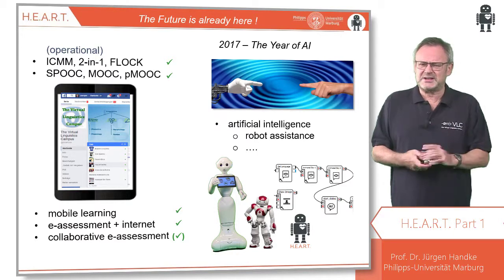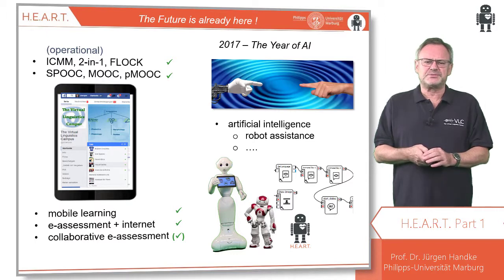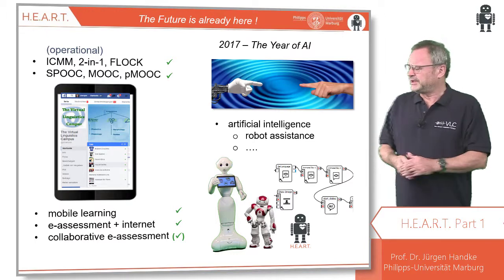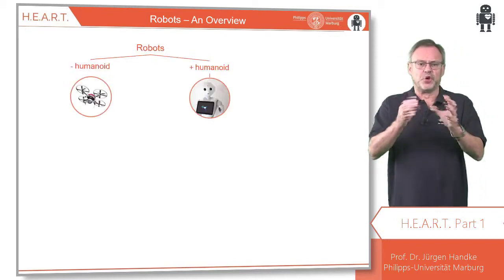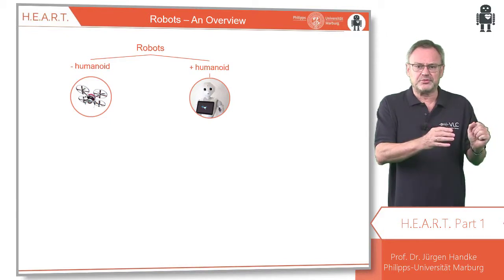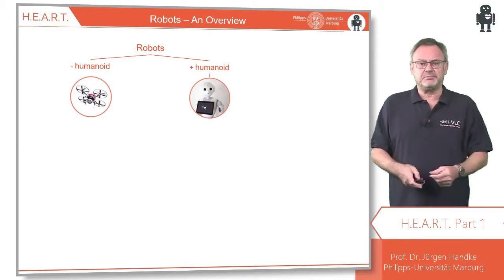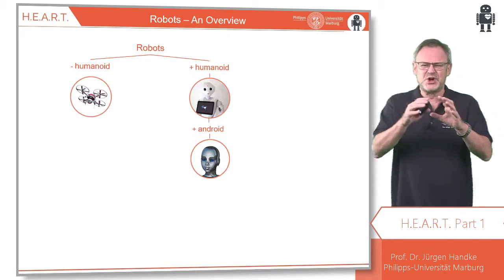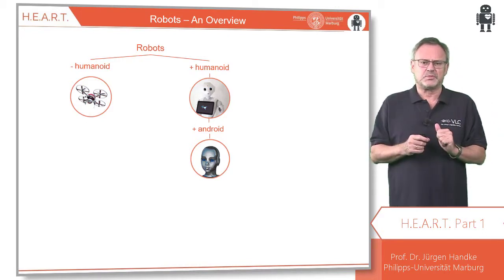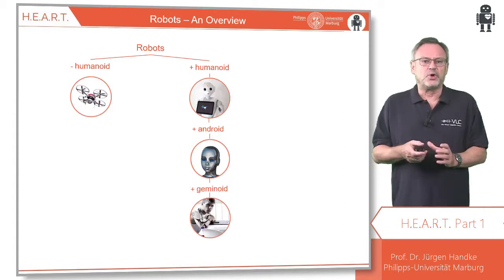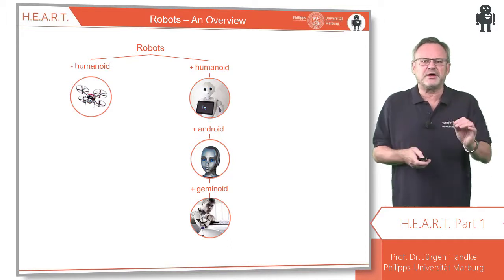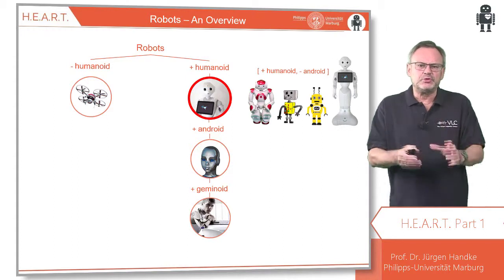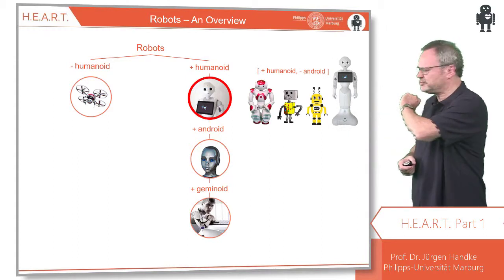But what exactly are humanoid robots? Here is an overview. We differentiate between non-humanoid and humanoid robots. Humanoid robots in turn can be android — that is, not similar but alike humans. And as clones of real humans, we call them geminoid. For several reasons which we already worked out in HEART, the simple humanoid variant seems to be the most suitable one.